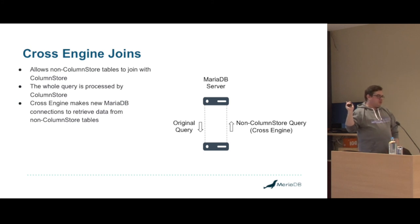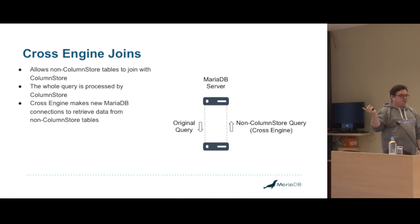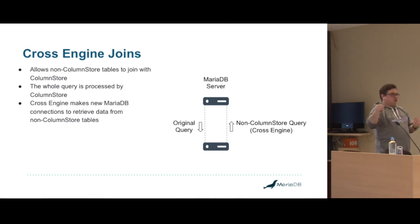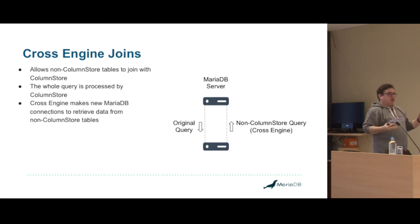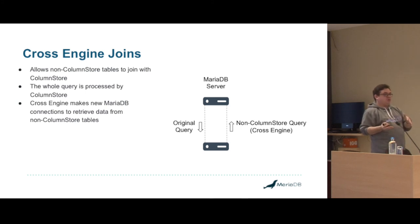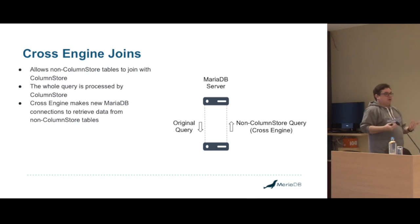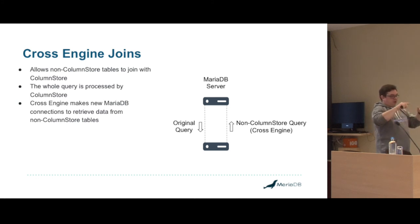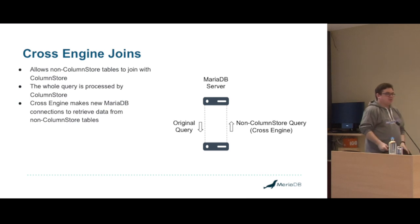Cross-engine joins are a feature somewhat unique to ColumnStore. If you want to join with an InnoDB table, we do this inside ColumnStore rather than inside MariaDB server — we make connections back to MariaDB and query the InnoDB data, then run it through our hash join algorithm. It's designed for using small pivot tables inside InnoDB where data could change quite a lot. It's not the best way to do things, but it's pretty efficient.